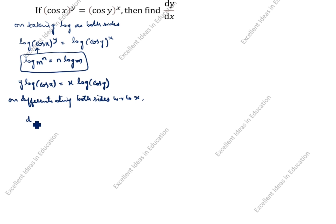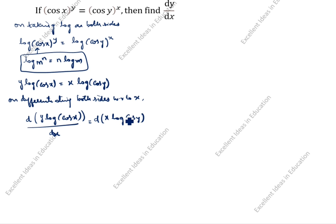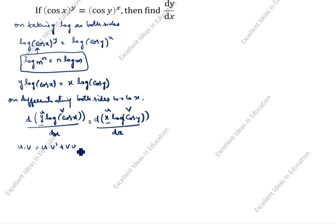What we will get is d of (y log cos x) by dx equal to d of (x log cos y) by dx. We will treat y as u and log cos x as v on the left side, and x as u and log cos y as v on the right side. The product rule formula is u into v dash plus v into u dash, or u dv by dx plus v du by dx. This we will now split.